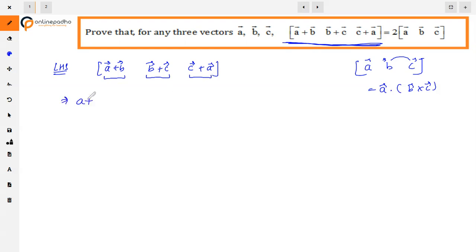So here we have to apply the first vector A plus B dot product with B plus C cross product C plus A. So we have A plus B dot B plus C cross C plus A.